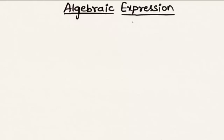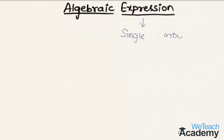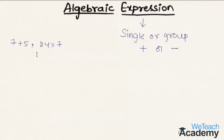First let us know what is an expression. An expression can be defined as a single or group of terms combined with the symbols plus or minus. Now let us consider few examples here. We have two expressions: 7 plus 5 and 24 into 7. If every term of an expression is a constant term, then we call such expression as a numerical expression.